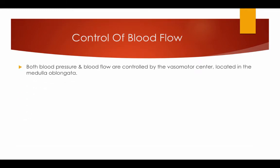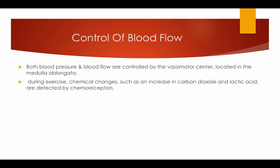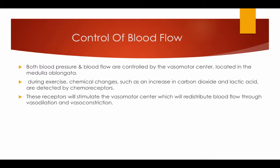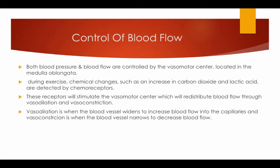Control of the blood. Both blood pressure and blood flow are controlled by the vasomotor centre, located in the medulla oblongata. During exercise, chemical changes such as an increase in carbon dioxide and lactic acid are detected by the chemoreceptors. These receptors stimulate the vasomotor centre, which redistributes blood flow through vasodilation and vasoconstriction. Vasodilation is when the blood vessels widen to increase blood flow in the capillaries, and vasoconstriction is when the blood vessels narrow to decrease blood flow.